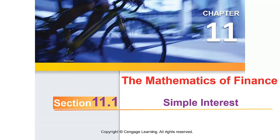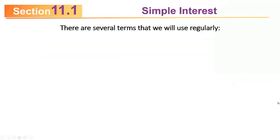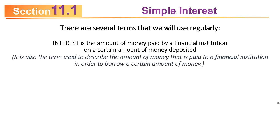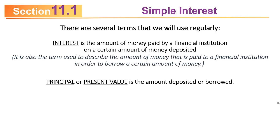Today we'll talk about section 11.1 on simple interest. There are several terms that we will regularly use. Interest is the amount of money paid by a financial institution on a certain amount of money deposited, or the amount paid to a financial institution to borrow money. Principal, or present value, is the amount deposited or borrowed.